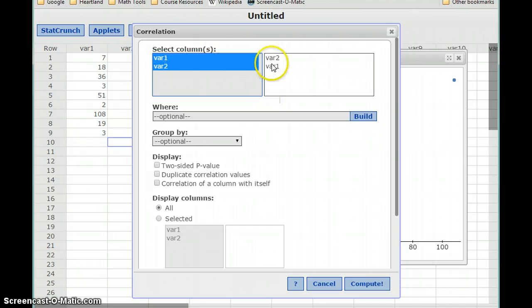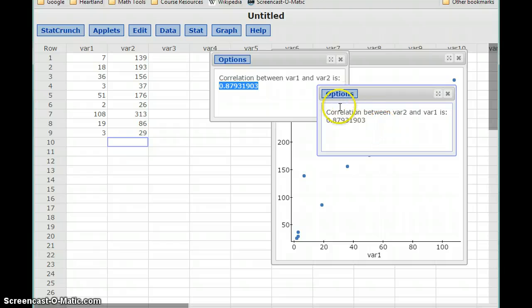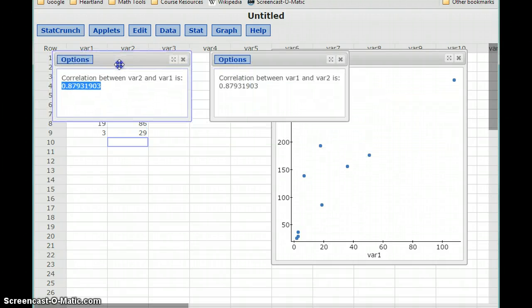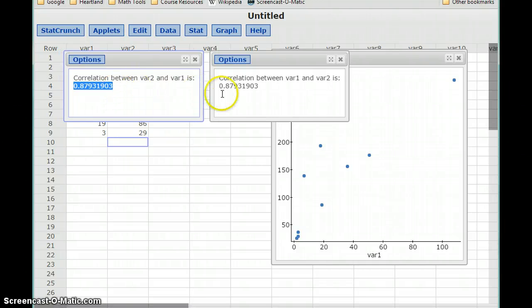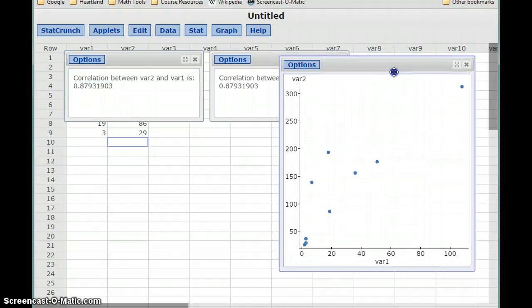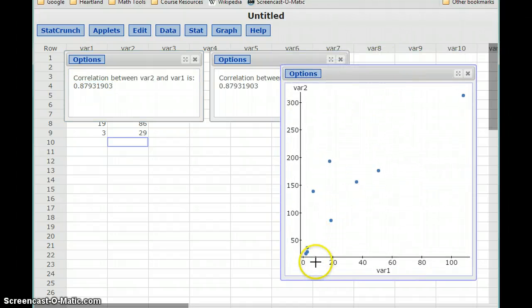So variable 2, then variable 1, and what we see is that we get exactly the same correlation coefficient. So the order of our variables doesn't change the correlation coefficient, but it will change the way our graph looks a little bit. So in this original scatter plot I selected the roller coasters as the x-axis, the amount contributed to tsunami relief as the y-axis.